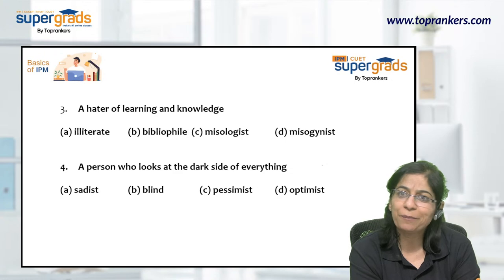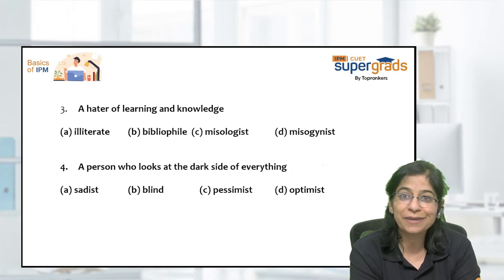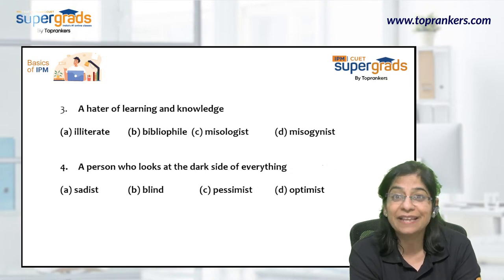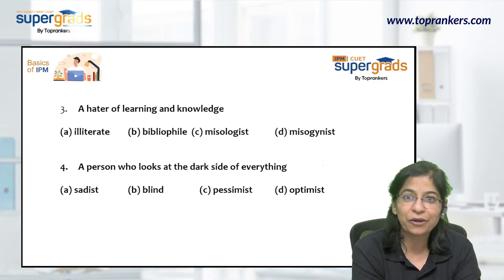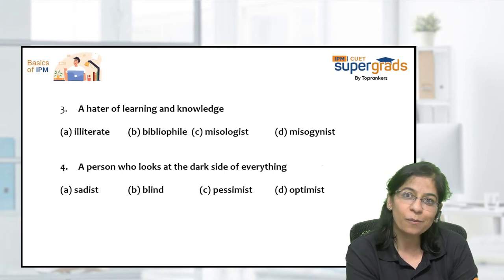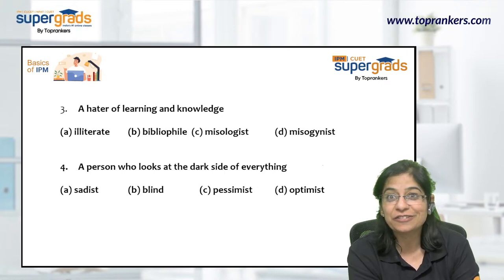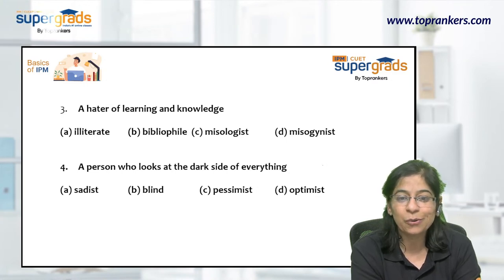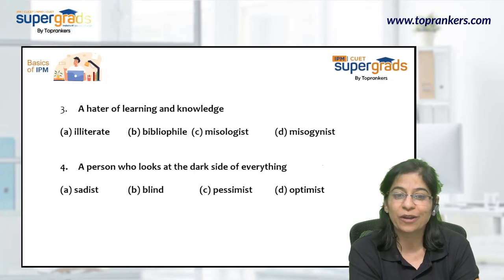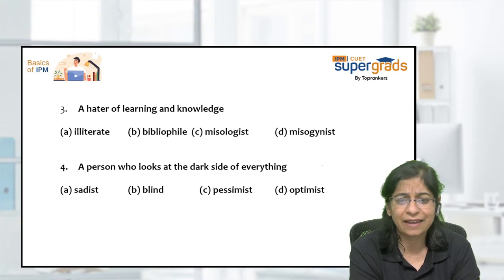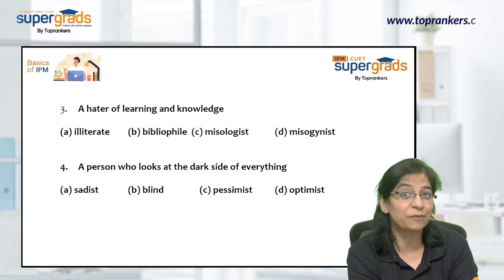Bibliophile is a beautiful word. The root 'phil' or 'phile' means love or lover/enthusiast of. 'Biblio' means books. Put them together — bibliophile means somebody who loves books and is fond of books. So this is clearly not the answer since we are talking about a hater, whereas bibliophile is someone who loves books. Misologist — 'miso' is a root word meaning hatred, and 'logi' means study. So misologist means somebody who hates learning, hates reasoning and argument.